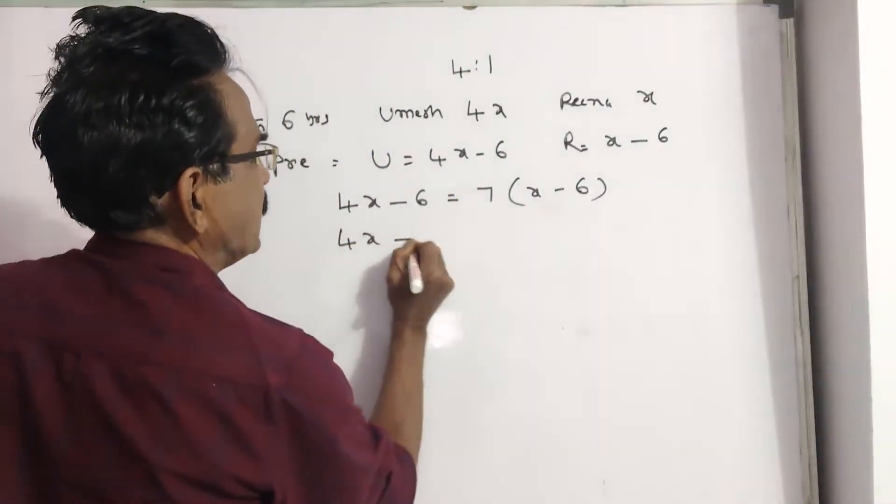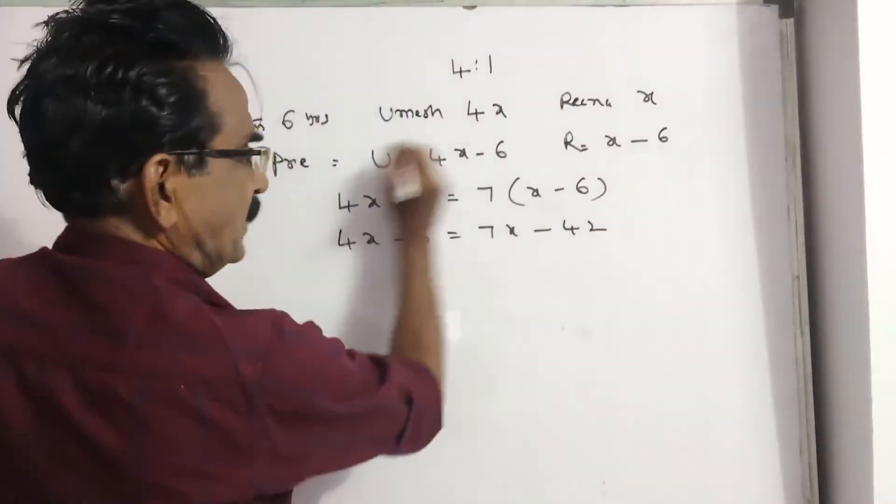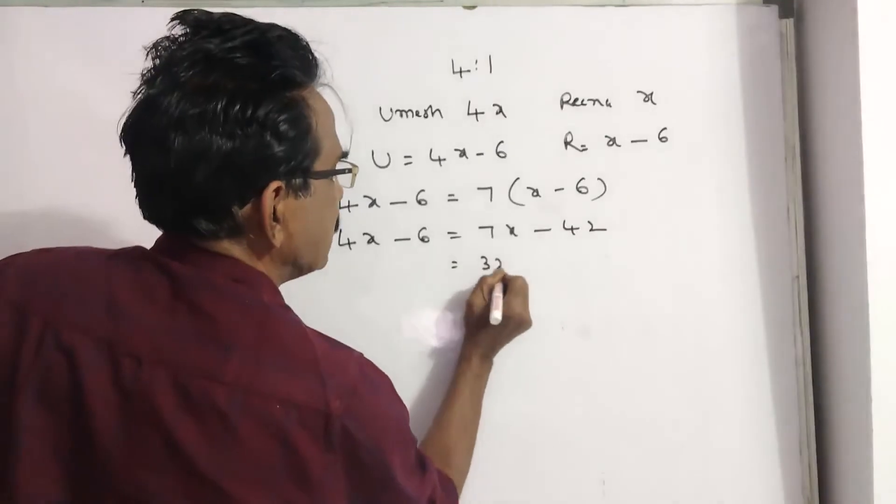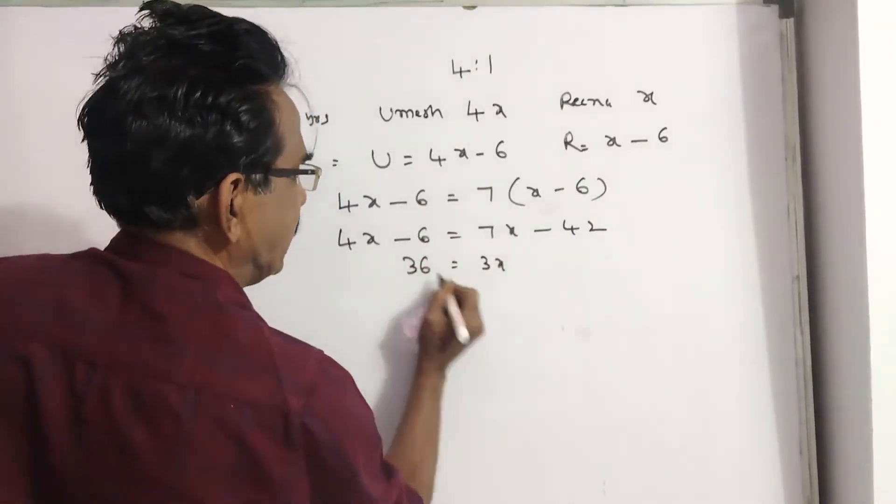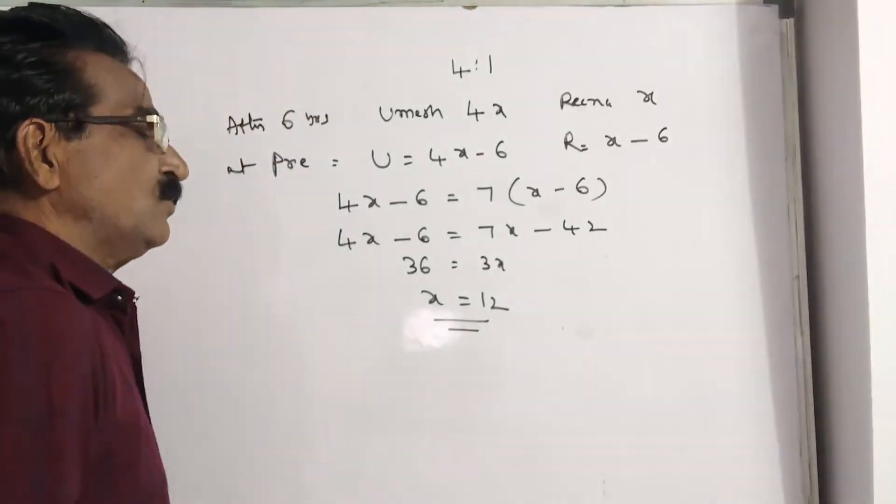4x minus 6 is equal to 7x minus 42. 3x is equal to 42 minus 6 is 36. X is equal to 12.